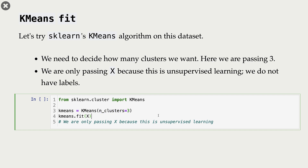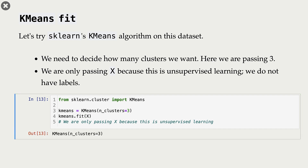Next, we are fitting K-means on our data set. Note that we are only passing X here. Remember that this is unsupervised learning — we do not have any labels. We are only passing our feature vectors.